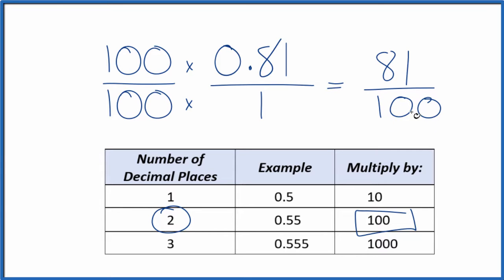We can't reduce this any further. So this is our fraction. If you divide 81 by 100, you will get 0.81.